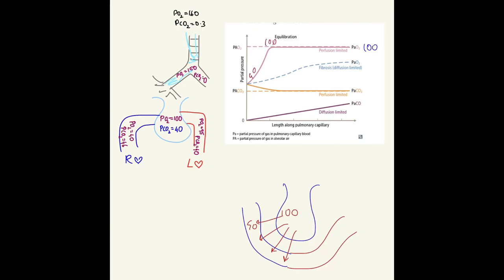But once equilibrium is reached at 100, there can be no more flow of oxygen. So the only way to increase oxygen diffusion is by increasing the perfusion—by bringing in more deoxygenated blood so that oxygen can continue to diffuse into the capillaries.